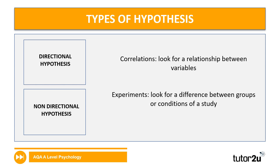In an experiment, what we're looking for is a difference between different groups or conditions of a study — that's to say the independent variables. For correlational research, the focus is different because we're looking for a relationship between different variables.